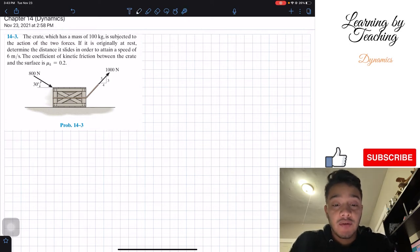It says the crate, which has a mass of 100 kilograms, is subjected to the action of these two forces. If it is originally at rest, determine the distance it slides in order to attain a speed of 6 meters per second. The coefficient of kinetic friction between the crate and the surface is mu sub k equal to 0.2.